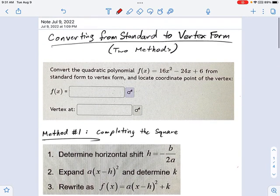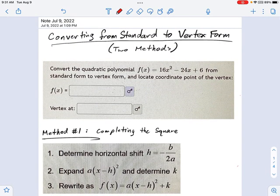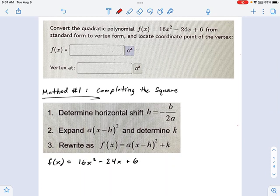We have a problem here which says convert from quadratic form. We see that's given to us like this, and we want to convert that into what's called vertex form, which is a different way of writing a polynomial.